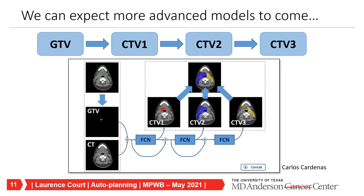One final example of auto-contouring: beyond automatic lymph node level contouring for head and neck elective CTVs, we can expect much more advanced models. A slide from Carlos Cadenas shows a model where you provide the GTV—both primary and nodal GTVs—plus the disease type, and it figures out what you want for CTV 1, 2, and 3. This involves much more decision-making as well as contouring compared to today's tools. This isn't in any product yet, but it's the direction we're heading.